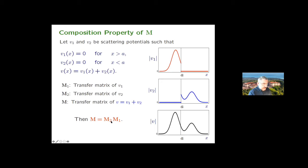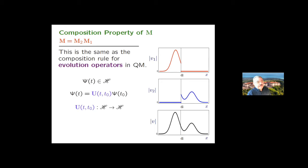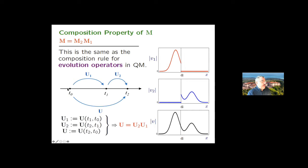Many years ago, I noticed that this is very similar to the way you compose evolution operators in quantum mechanics. If you have a state vector in a Hilbert space, you can write the evolution in time in terms of the time evolution operator. If you want to evolve a state vector from time T0 to time T2, you can first evolve to intermediate time T1 and then from T1 to T2. The composition property of evolution operators is almost identical to the way transfer matrices compose. This was the motivation for me to seek quantum systems whose evolution operators give the transfer matrix for a given scattering potential.